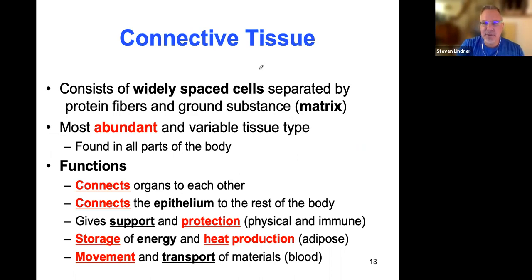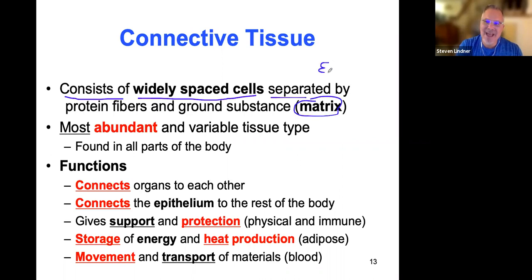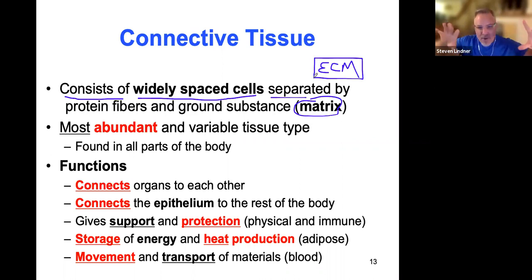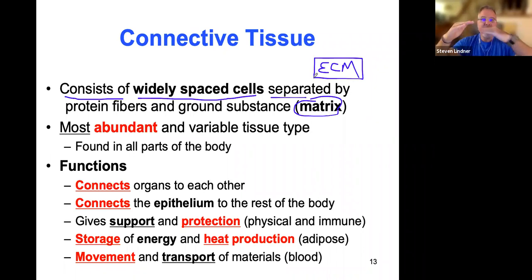One of the big differences is the first sentence here: connective tissue consists of widely spaced cells that are separated by matrix, or the extracellular matrix — ECM. So when you have cells that are far apart from one another and have lots of matrix or ground substance between the cells, that's connective tissue. Epithelium, like stratified squamous, has multiple layers of cells packed closely together with little extracellular matrix.